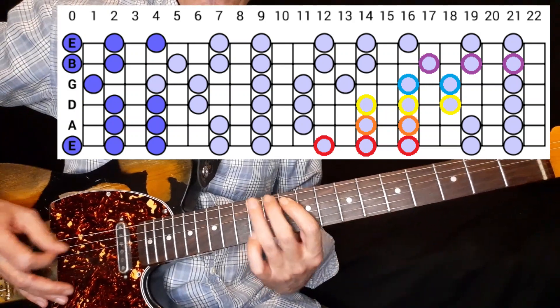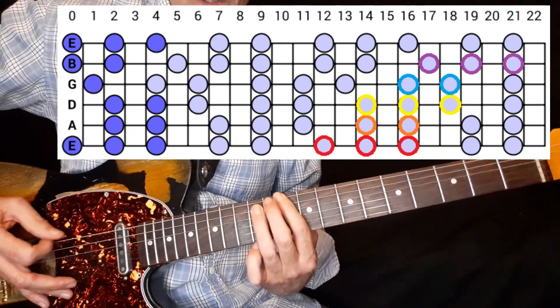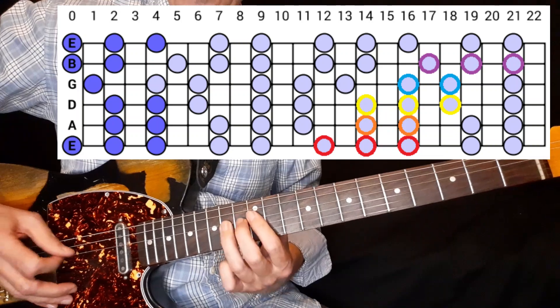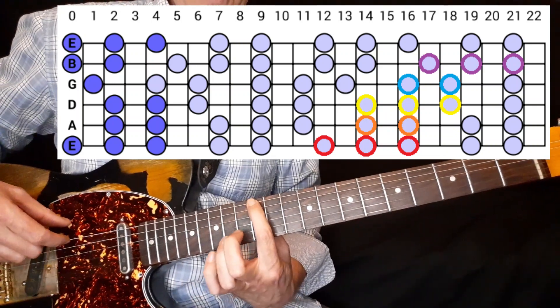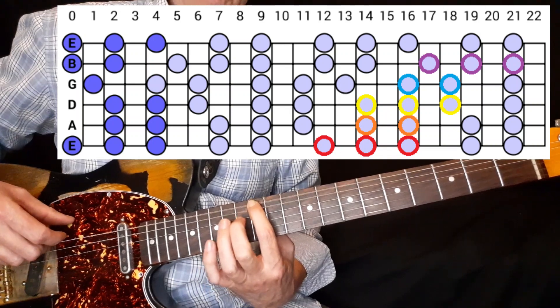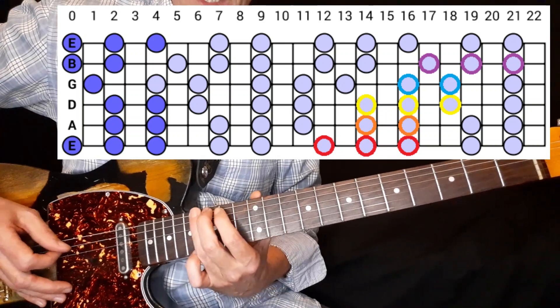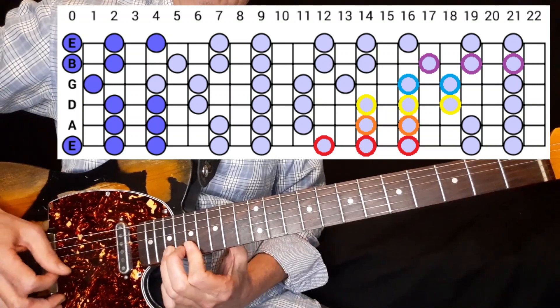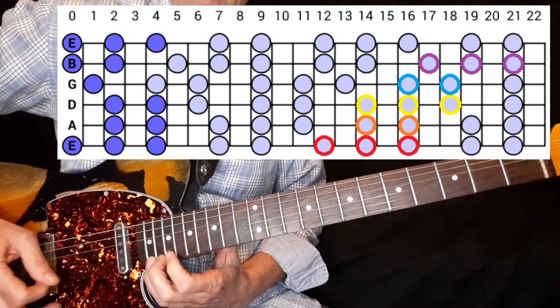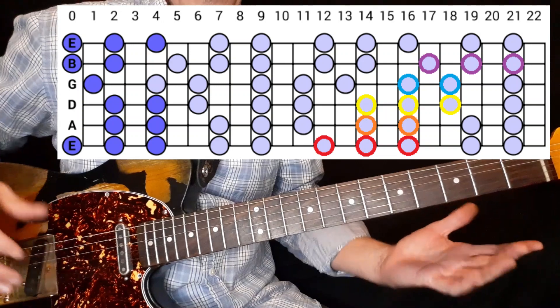Now, minor, we would be doing 1, 2, 1, 2, 3. 1, 2, 1, 2, 3. 1, 2, 1, 2, 3. But in this case, we're doing major. So, we're going to stay on the tonic, or the root note, and go 1, 2, 3. 1, 2, 1, 2, 3. 1, 2, 1, 2, 3. It's as simple as that.